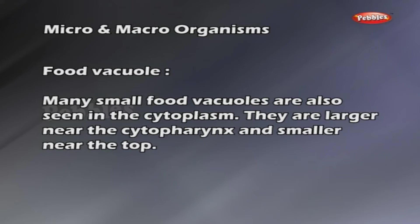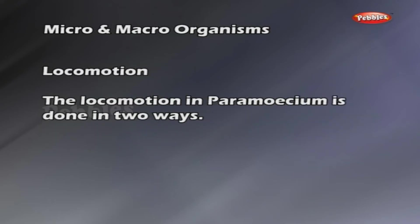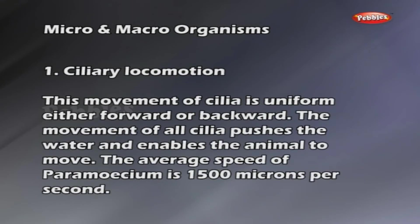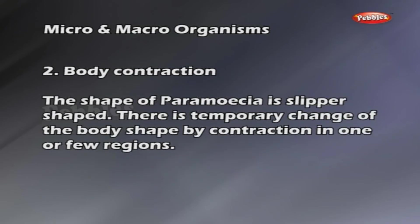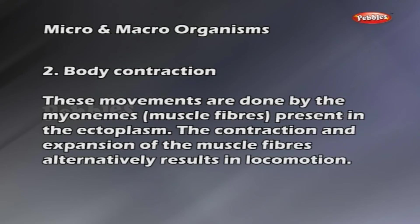Food vacuole: many small food vacuoles are seen in the cytoplasm. They are larger near the cytopharynx and smaller near the top. Locomotion in Paramecium is done in two ways. Ciliary locomotion: the movement of cilia is uniform, either forward or backward. The movement of all cilia pushes the water and enables the animal to move. The average speed of Paramecium is 1500 microns per second. Body contraction: the shape of Paramecium is slipper-shaped. There is a temporary change of body shape by contraction in one or few regions.